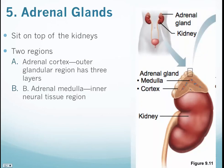This gland sits right above the kidney — one on each kidney. If you notice, it splits into two different regions. The inner area is called the medulla, and the outer region is called the cortex.